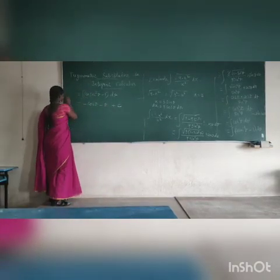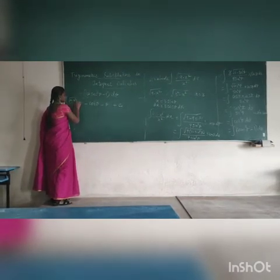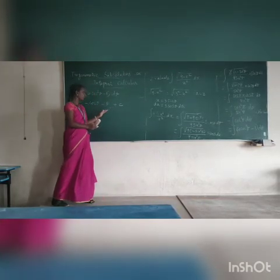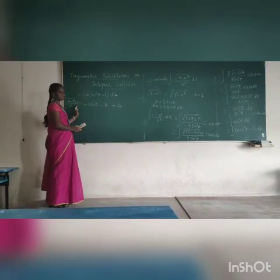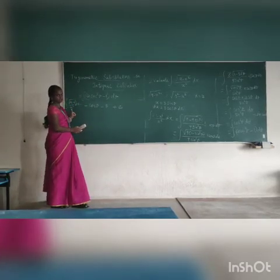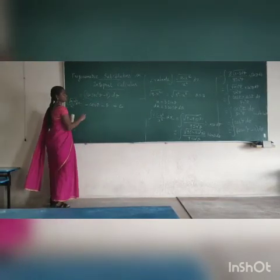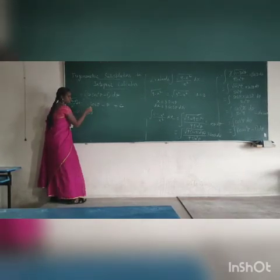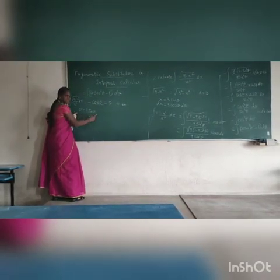So we have the integration of 9 minus x squared divided by x squared dx. But the answer is in terms of theta, that is trigonometric values. So we have to change it back in terms of the algebraic function. To do that, we need to substitute the cot theta value and theta value to get the algebraic function. So we need to find the cot theta value.